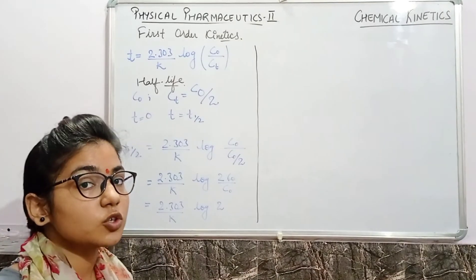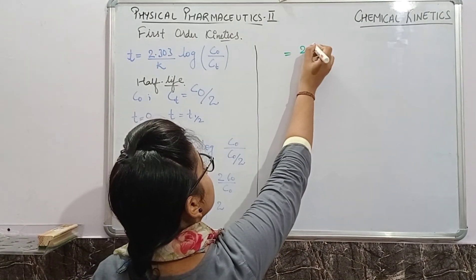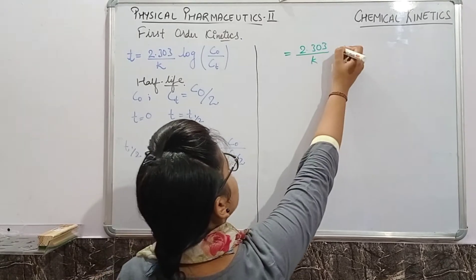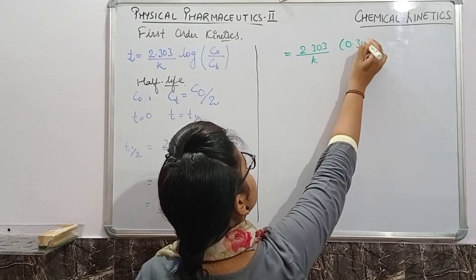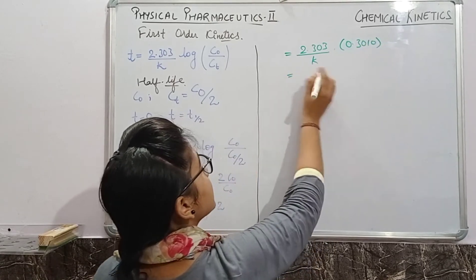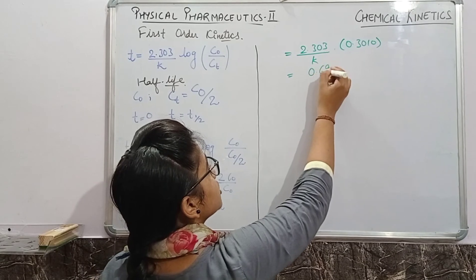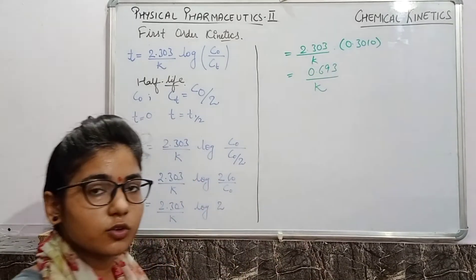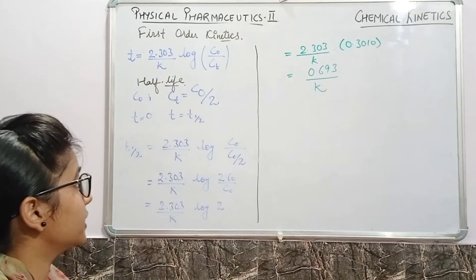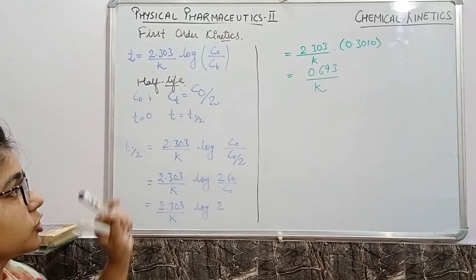Now we know the value of log 2 is 0.3010, so let's put that value: 2.303 upon k times 0.3010, as it is the value of log 2, and after multiplying this it will obtain 0.693 upon k. So by using this value you can calculate the half life of a first order reaction kinetics.